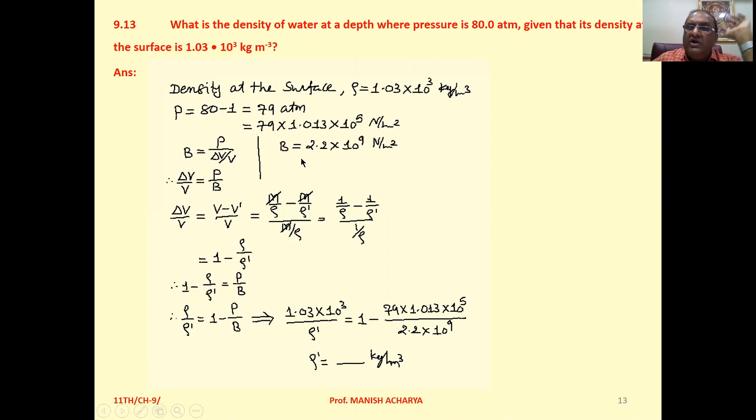Now bulk modulus of water is 2.2 times 10 raised to 9 newtons per meter squared. Due to the pressure exerted by the water column at the bottom, compression in water will take place.